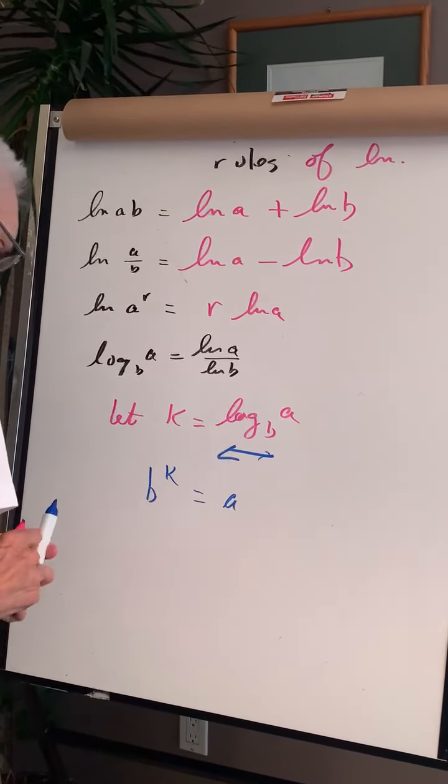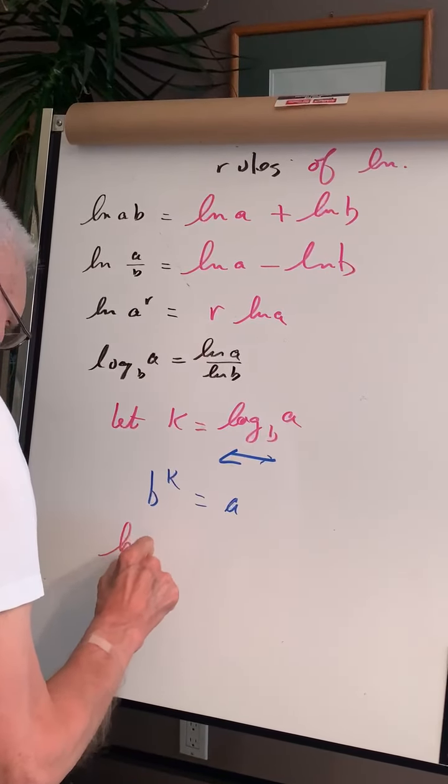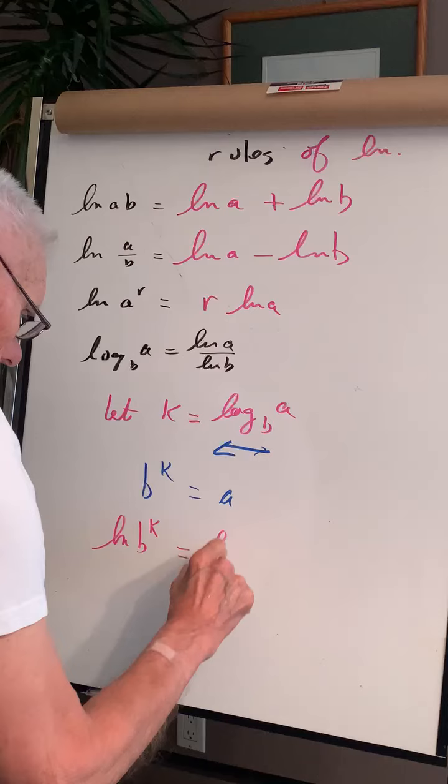Now let's take the ln of both sides. The ln of B to the K is ln A.